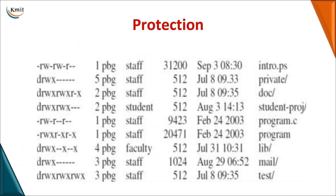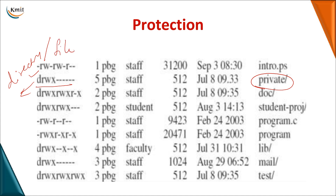Looking at a snapshot of protection in the Unix operating system: the first letter 'D' indicates that the entry is a directory. If there is a hyphen instead, it indicates a regular file. Then RWX shows the read, write, and execute permissions provided for the owner, while no operations are provided for the group or others.